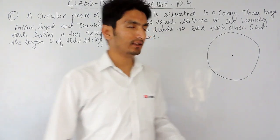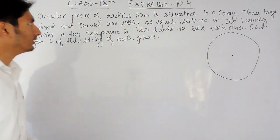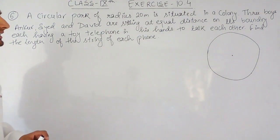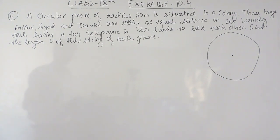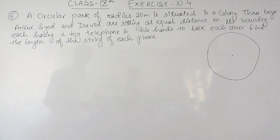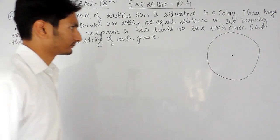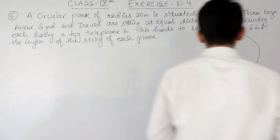Hello everyone. In this video we are going to solve question number six of exercise 10.4. The question says: a circular path of radius 20 meters is situated in a colony. Three boys — Angkor, Syed and David — are sitting at equal distance on its boundary, each having a toy telephone in his hands to talk to each other. You have to find the length of the string of each phone.